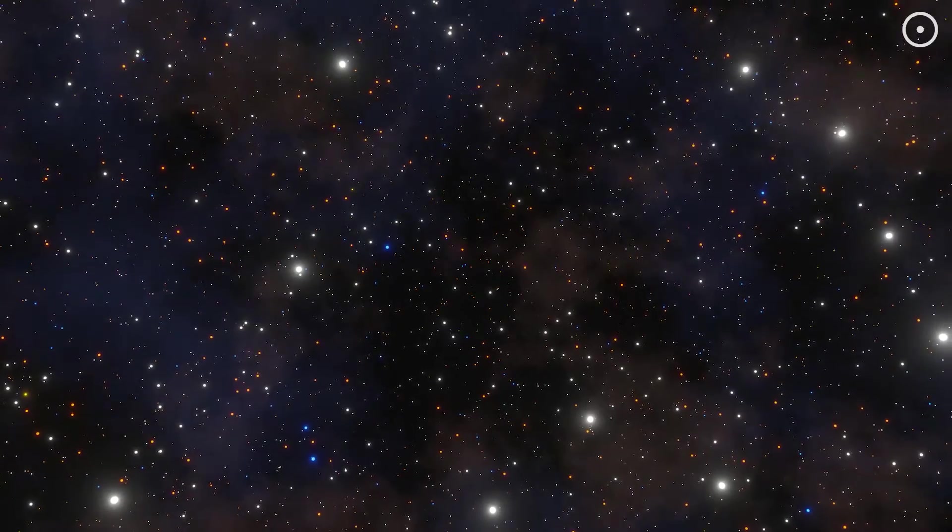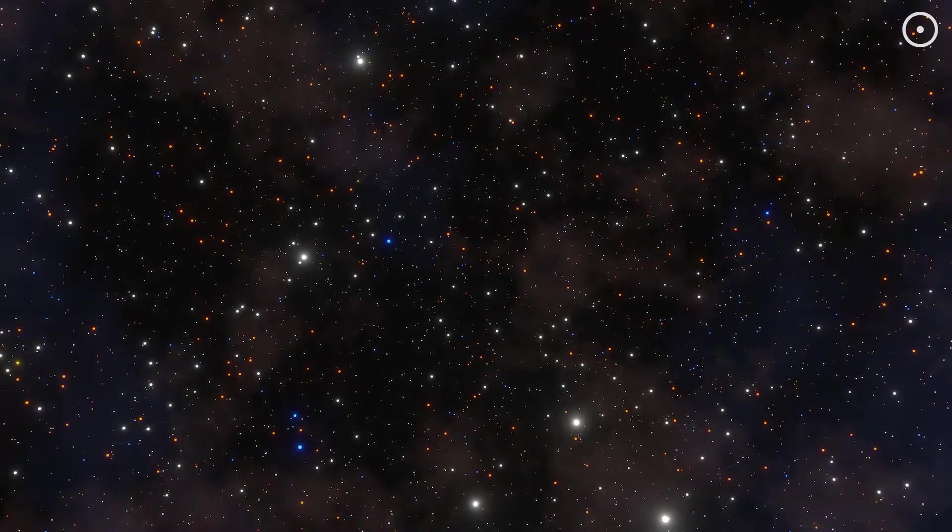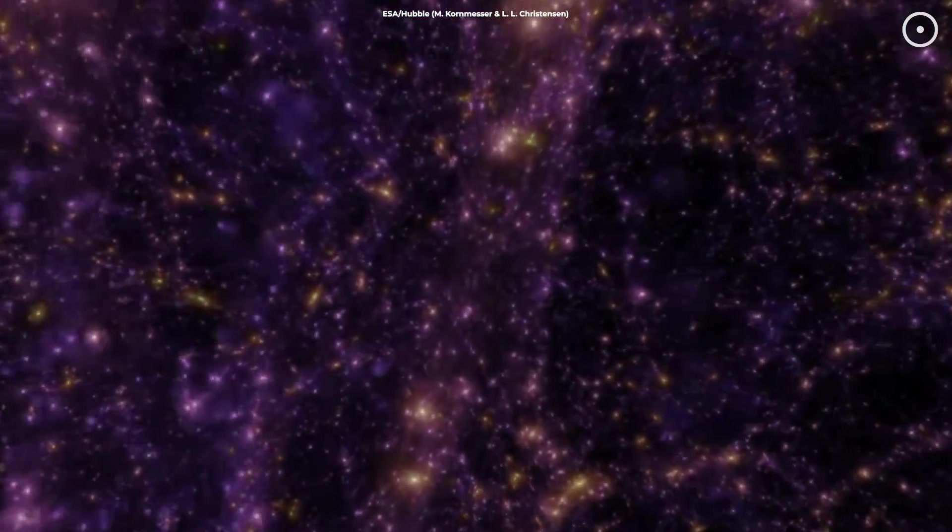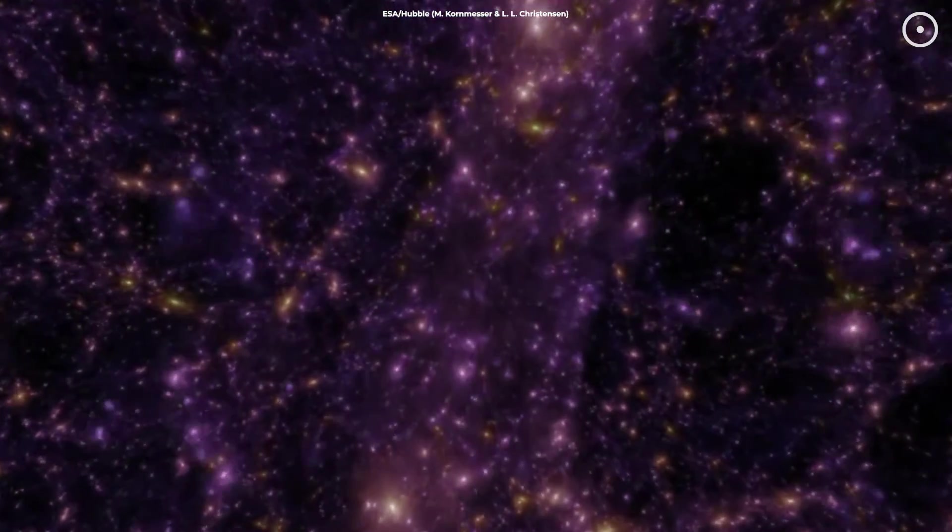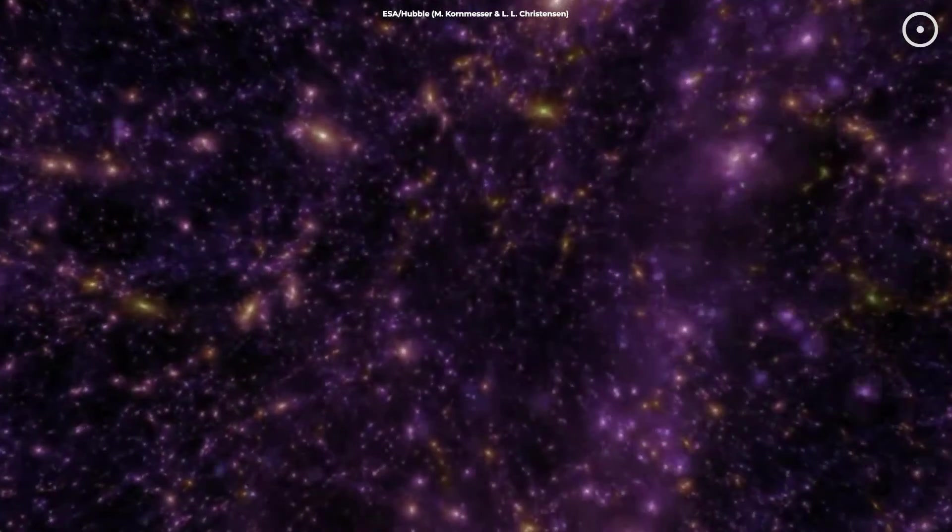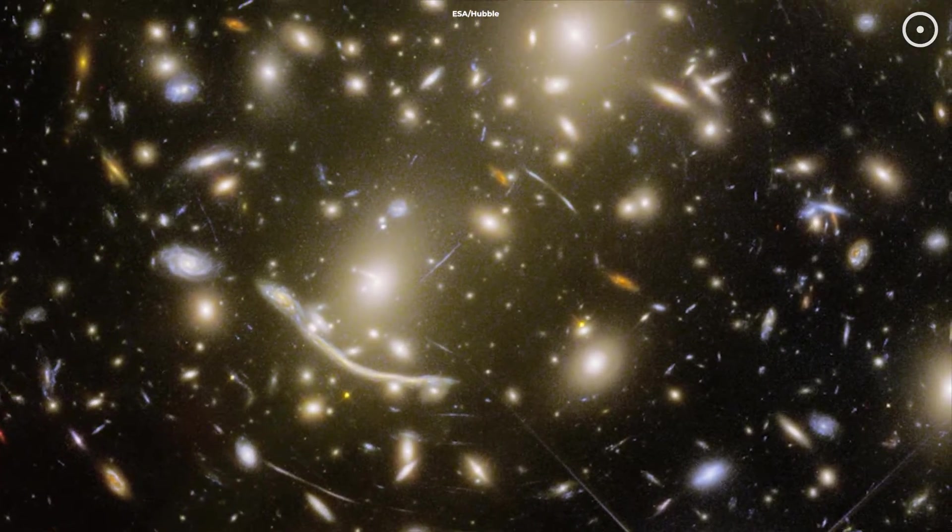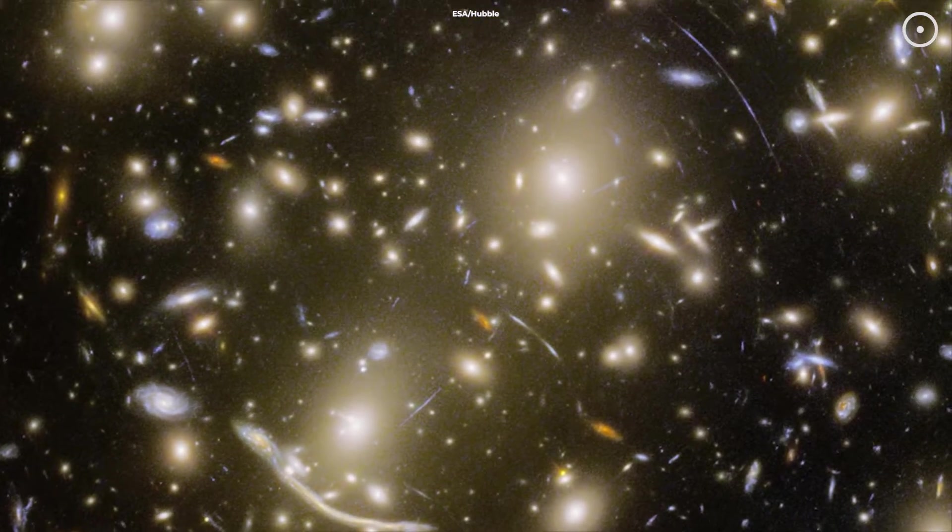Dark matter is really weird because we can't see it. It doesn't shine like stars or reflect light like planets. It's completely invisible, but just because we can't see it doesn't mean it's not there. Scientists are sure it exists because of the gravitational effects it has on things we can see.